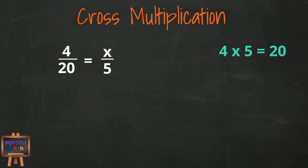4 times 5 equals 20. So what number times 20 equals 20? Well, 1 of course. So 4 twentieths is actually equivalent to 1 fifth.